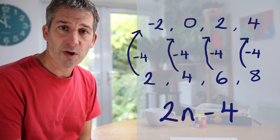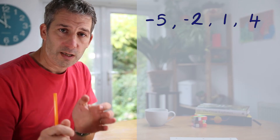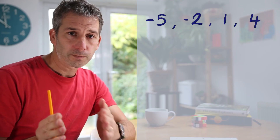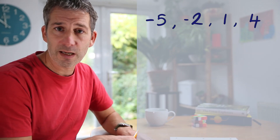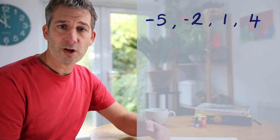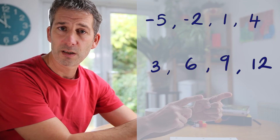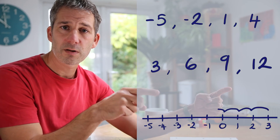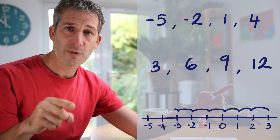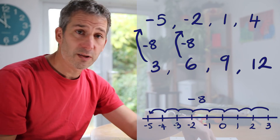The next one: minus 5, minus 2, 1, 4 — it's going up in threes, so it's going to be three n. We just need to work out how far it's shifted down. Don't let the negatives throw you — just think about your number line. We're trying to work out how far we've moved to go from our three times table, which starts at three, down to minus five. Moving down the number line: 2, 1, 0, minus 1, minus 2, minus 3, minus 4, minus 5. We've had to move down eight places. So this one will be three n minus eight.